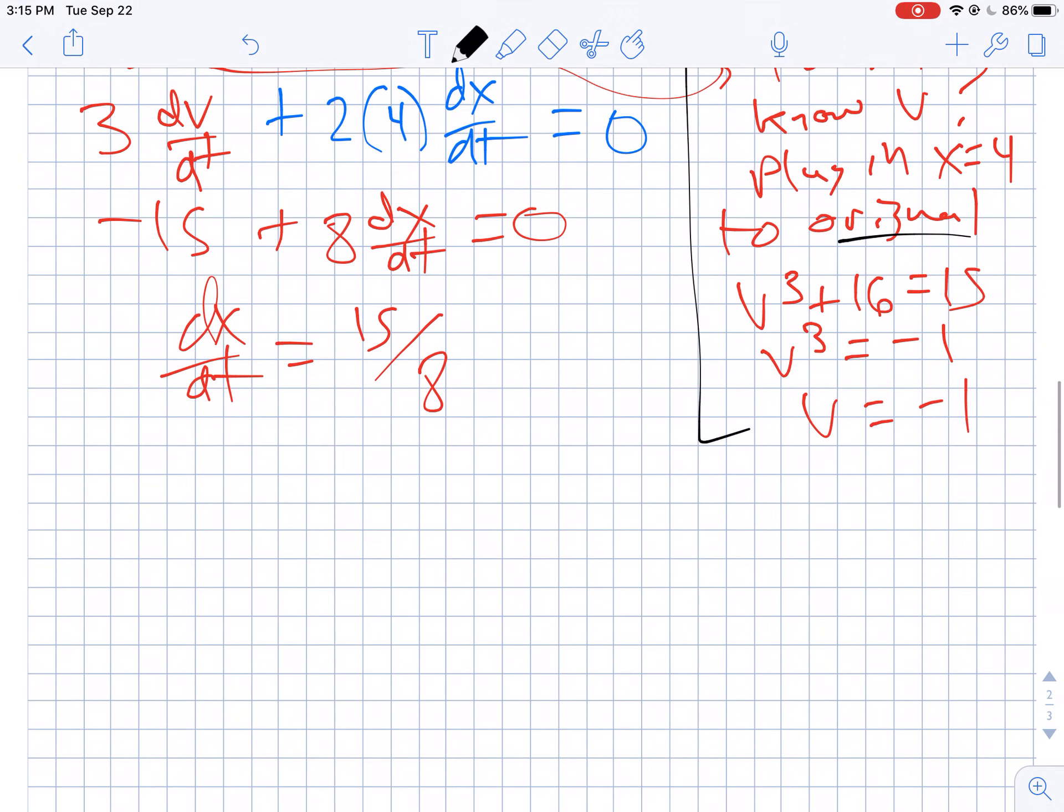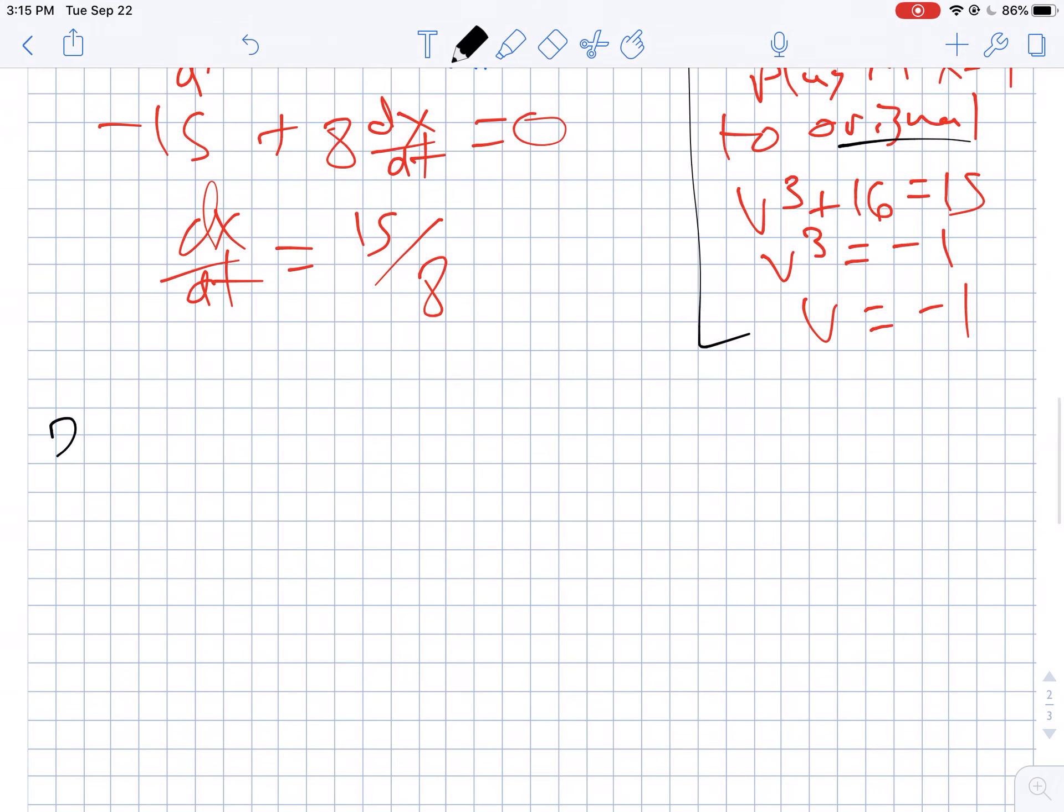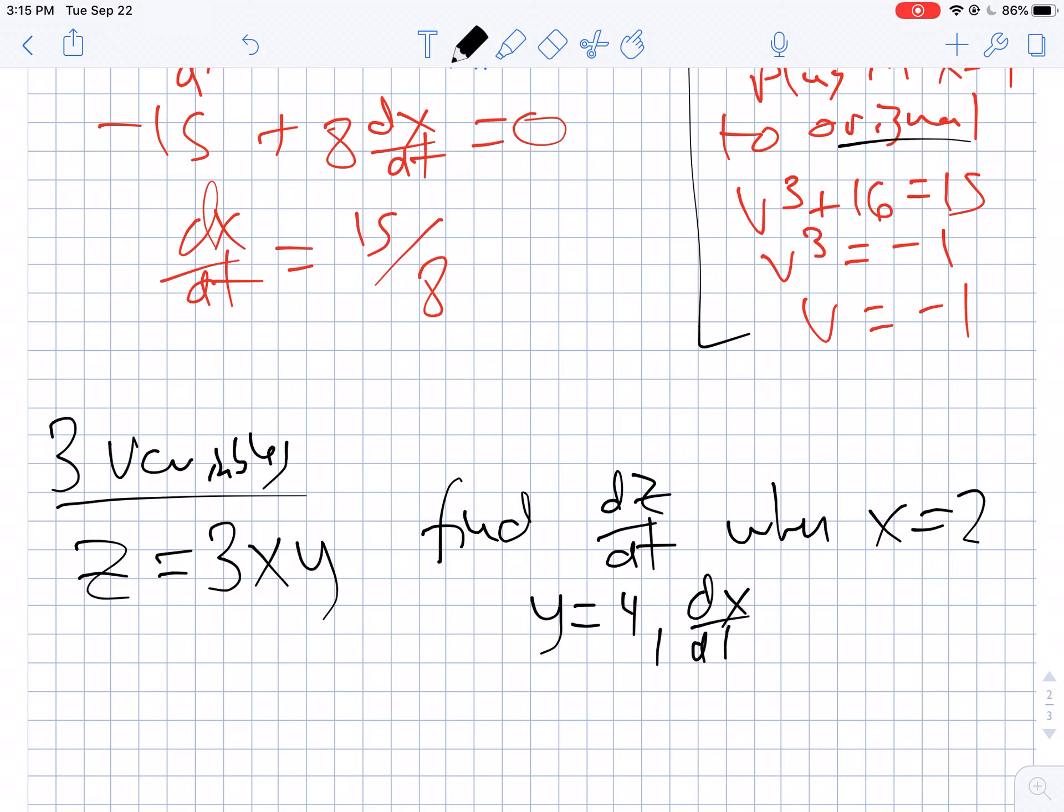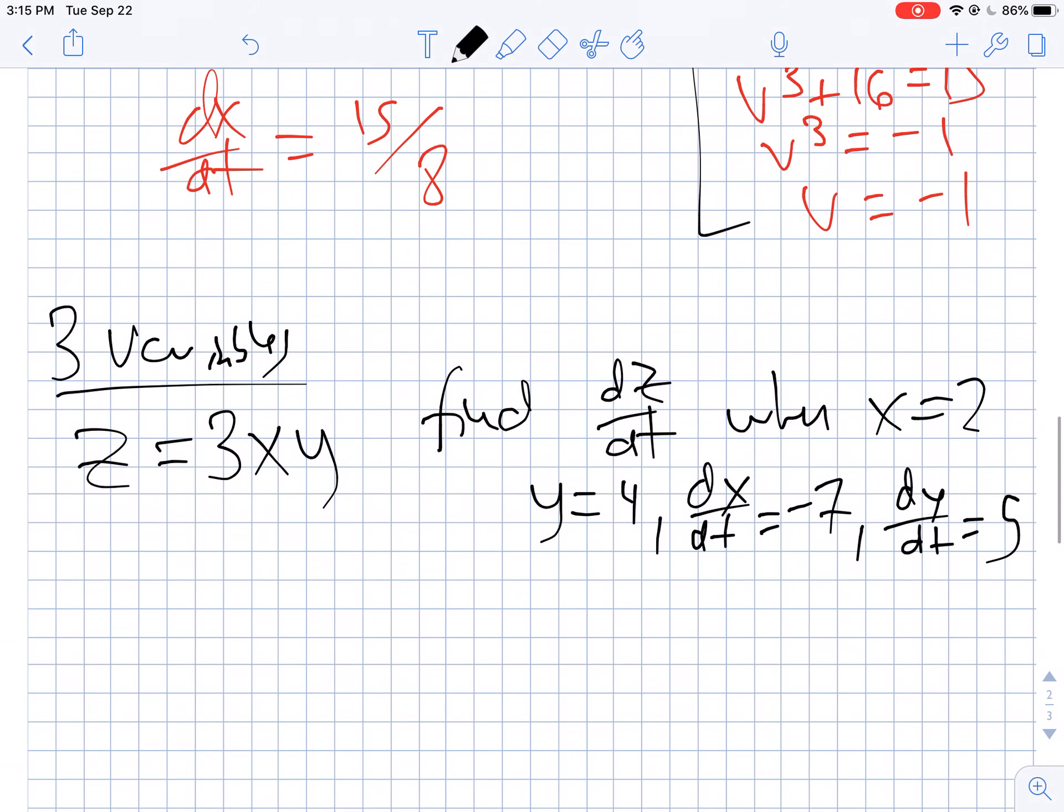Now let's look at one where we have a third variable. We have three variables. Let's say I tell you that z = 3xy, and I'm going to ask you to find dz/dt when x = 2, y = 4, dx/dt = -7, and dy/dt = 5. We have all three of these variables changing with respect to time, so we're going to start by taking a derivative of both sides. dz/dt is on the left side.